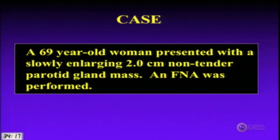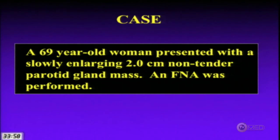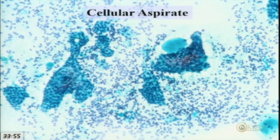The next case is a 69-year-old woman with a slowly enlarging, 2-centimeter, non-tender parotid gland mass — non-tender, so we're not really thinking adenoid cystic carcinoma. An FNA was performed. For those who do a lot of salivary gland cytology, you might recognize the diagnosis just by looking at it — it has a characteristic appearance, what we call in the US an 'Aunt Minnie.'